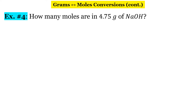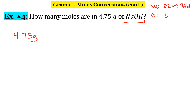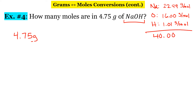In this example: how many moles are in 4.75 grams of NaOH? We start with what's given: 4.75 grams. We need the molar mass of sodium hydroxide. Sodium (Na) is 22.99 g/mol, oxygen is 16.00 g/mol, and hydrogen is 1.01 g/mol.